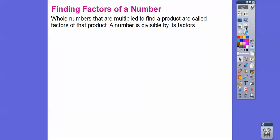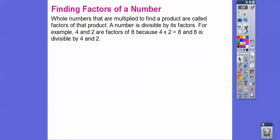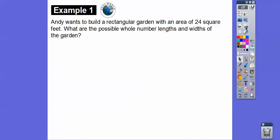Whole numbers that are multiplied to find a product are called the factors of that product. So a number is divisible by its factors. Here's an example: 4 and 2 are both factors of 8 because 4 times 2 equals 8. And 8 is divisible by 4 and 2. So if 8 is divisible by these numbers, then these numbers are called factors of 8.